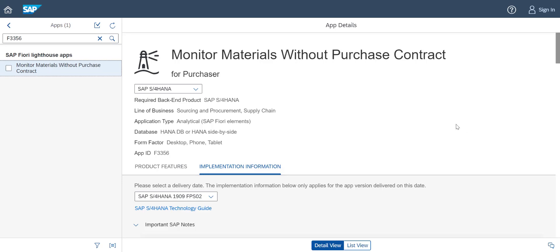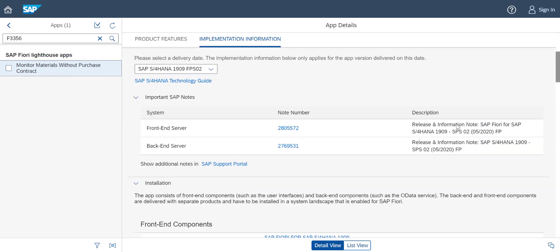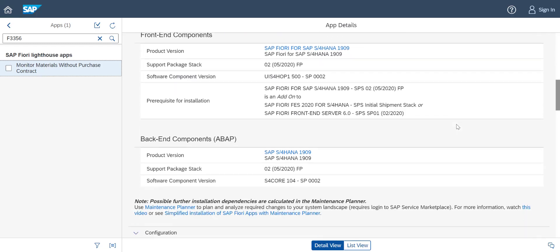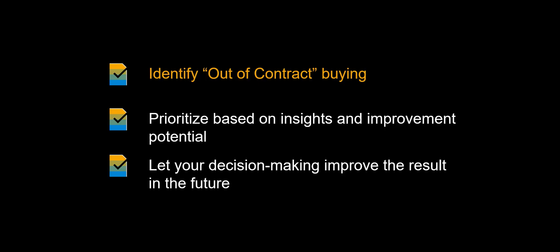You can find more information in the Fiori app library, app at F3356. Before we end this quick video, let us recap. The Monitor Materials Without Purchase Contract app identifies the materials that are procured outside of existing procurement contracts. The app helps you prioritize those materials that will provide the largest improvement for your organization. Thanks to machine learning-based algorithms, your decisions will be used to improve the results in the future.